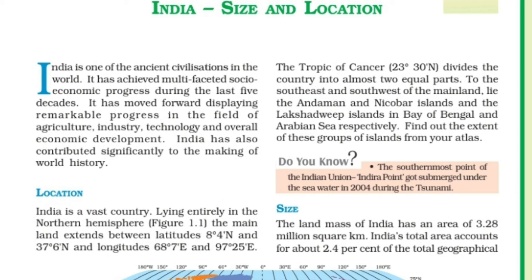India's total area accounts for about 2.4% of the total geographical area of the world. From figure 1.2, it is clear that India is the 7th largest country in the world. India has a land boundary of about 15,200 kilometers.